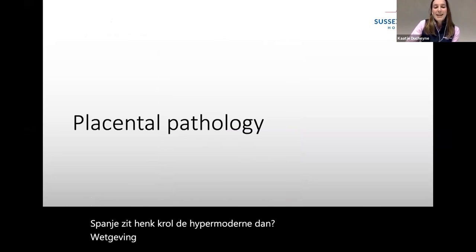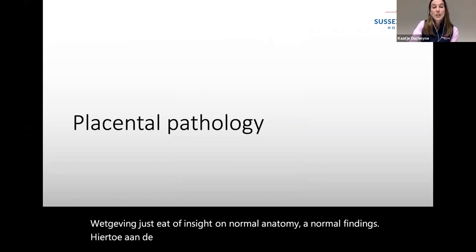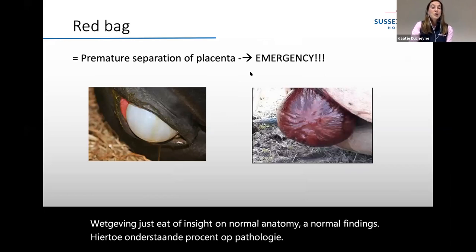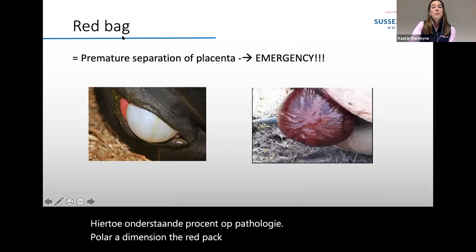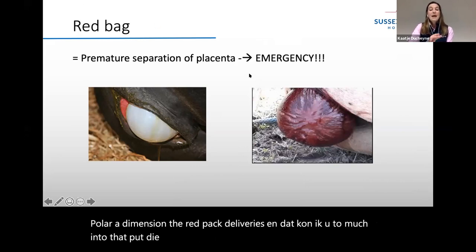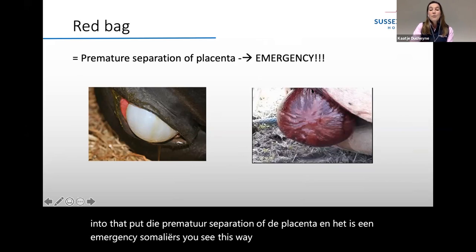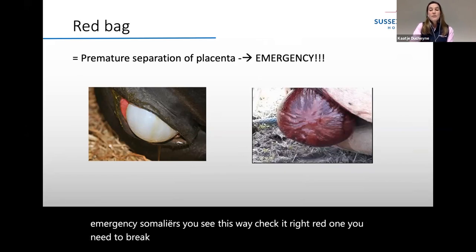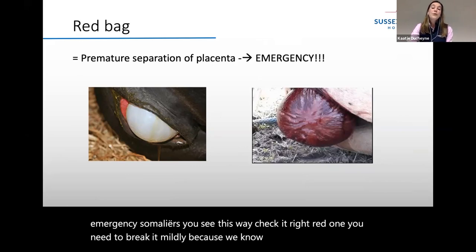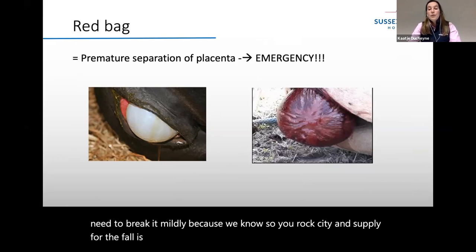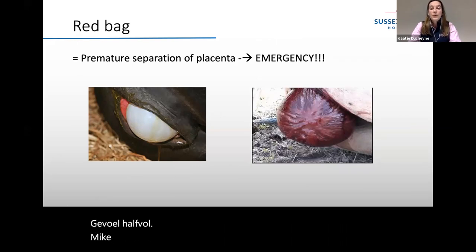Moving on to placental pathology: red bag delivery — already mentioned by Paula — is a premature separation of the placenta and it is an emergency. Normally you should see a white sac coming out; if you see a red one, you need to break it immediately because oxygen supply to the foal is compromised. The foal needs to come out, may need support afterwards, and there is a high chance of having what we call a dummy foal.